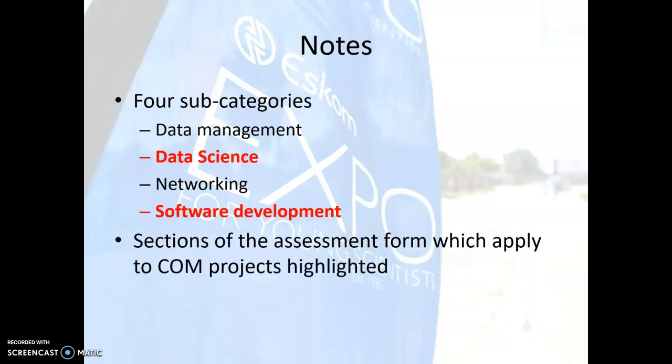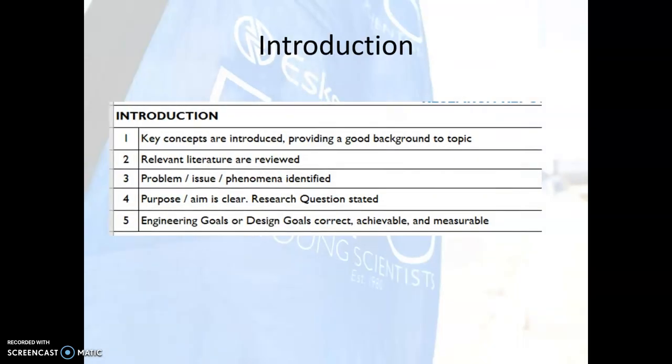In the sections that follow, we're going to look at the various headings on the assessment form, and I've highlighted areas which apply specifically to computer science type projects. In the introduction, items one through four are essentially the same for all categories. However, number five refers to engineering goals or design goals — design goals apply to the computer science project, so that item should be read as 'design goals: correct, achievable, and measurable'.